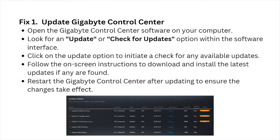Look for an update or 'check for updates' option within the software interface. Click on the update option to initiate a check for any available updates. Follow the on-screen instructions to download and install the latest updates. Then restart the Gigabyte Control Center to ensure the changes take effect.